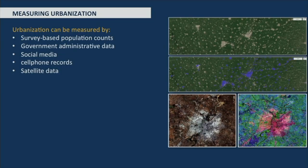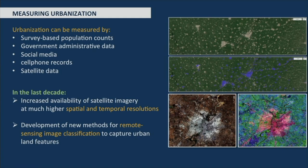There are different ways to measure urbanization: survey-based population counts, administrative data, social media, cell phone records, nighttime light, and of course satellite imagery. In the last decade, we see more and more satellite imagery available at ever-improving spatial and temporal resolutions, together with the development of different machine learning approaches designed to capture the unique characteristics of urban land.